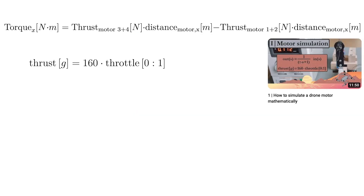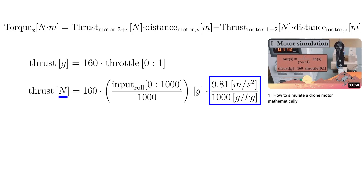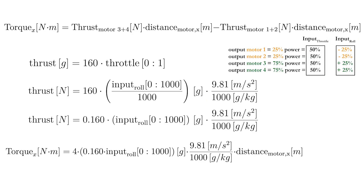In the previous video, we saw how you can determine the thrust from our brushless motor, which was equal to 160 multiplied by a throttle value between 0 and 1 for our GEPRC motor. To get the thrust in Newton, multiply this equation with the gravitational constant divided by 1000 to go from gram to kilogram. Because you input a motor value between 0 and 1000 in the flight controller code instead of a value between 0 and 1, divide the roll input by 1000 as well. Now that we have an equation expressing the motor thrust, the resulting torque can easily be calculated. Because the roll input value is equal for all four motors but has a positive sign for motors 3 and 4 and a negative one for motors 1 and 2, the resulting equation is simply 4 times the motor thrust multiplied by the distance of the motor to the x-axis.